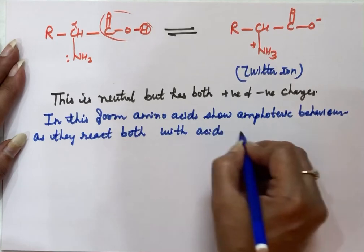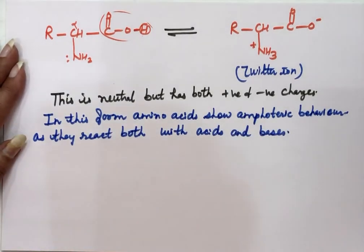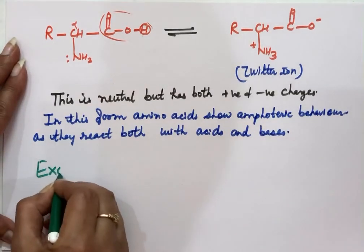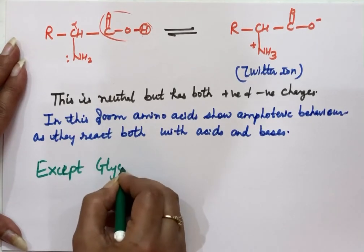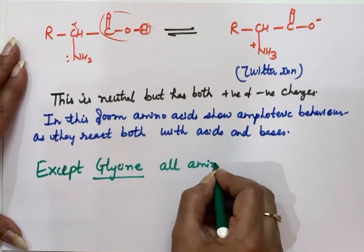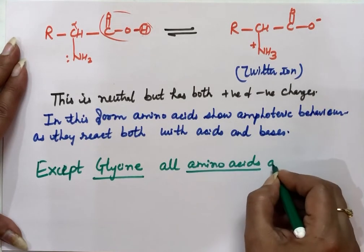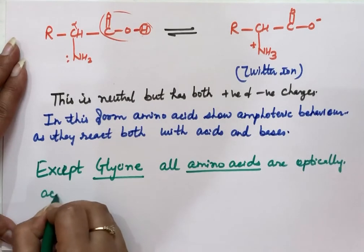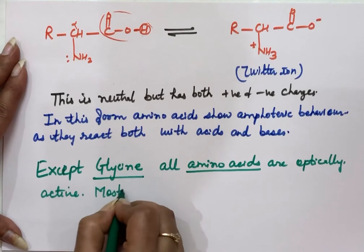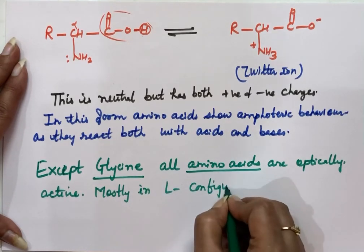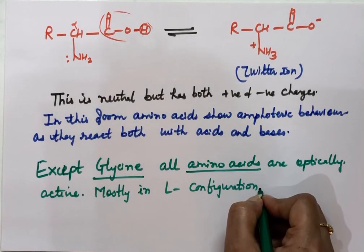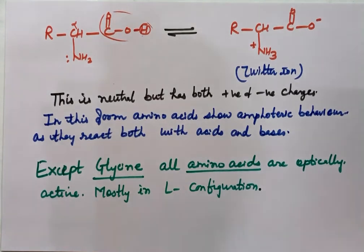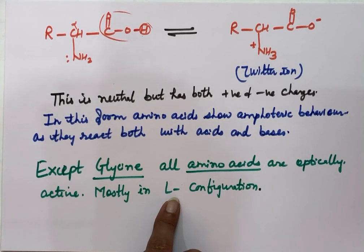Except for the amino acid glycine, all other amino acids are optically active in nature, and most of them exist in the L configuration. L configuration for amino acids means the NH₂ group on the second last carbon comes on the left hand side — similar to how in carbohydrates, the OH group of the second last carbon on the left gives the L configuration.